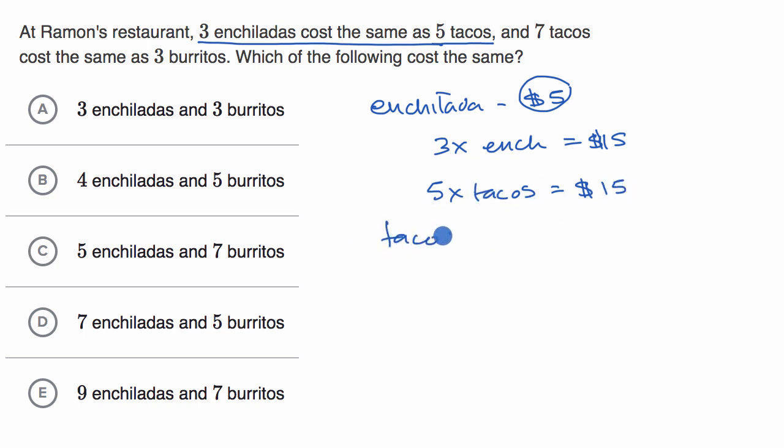So tacos are $3. And then seven tacos would be the same as three burritos. So seven times tacos, that's going to be equal to $21. And that's going to be the same thing as three burritos. So three times burritos is equal to $21. And then divide both sides by three. Our burrito is going to be $7 each.